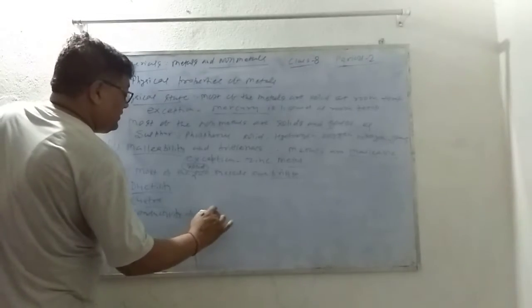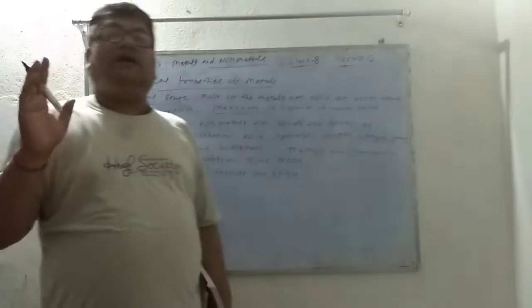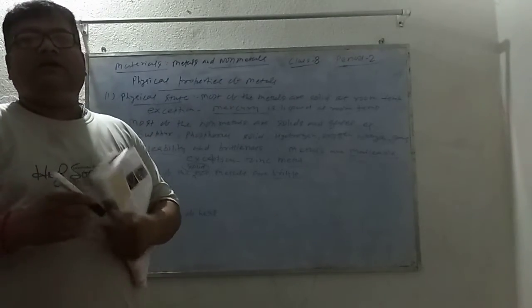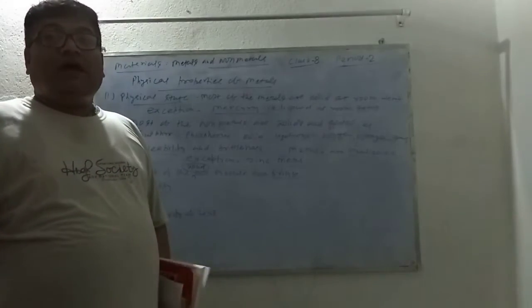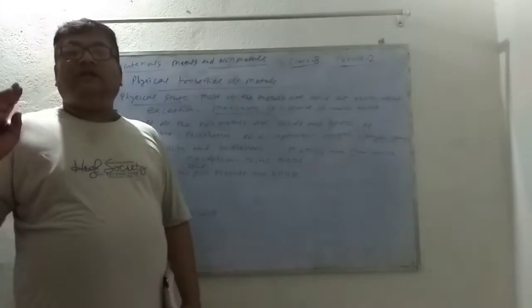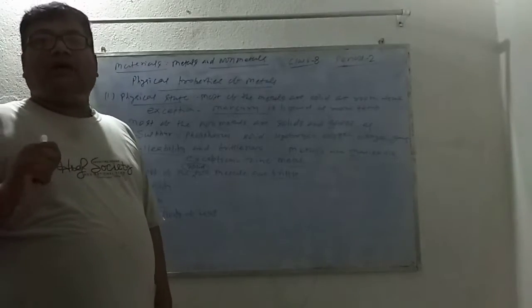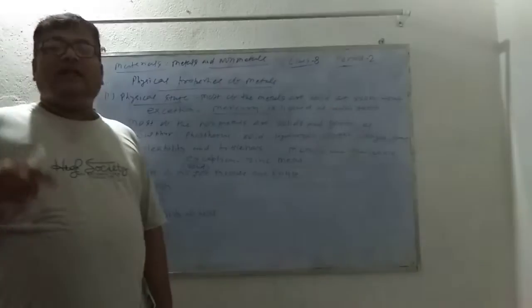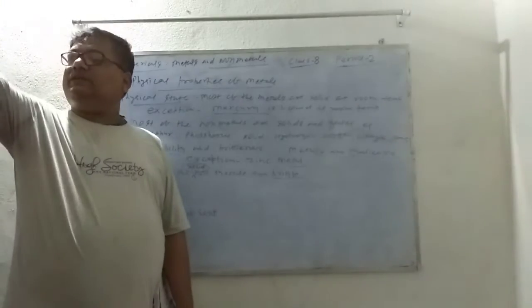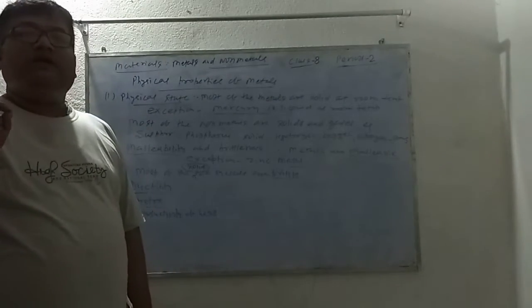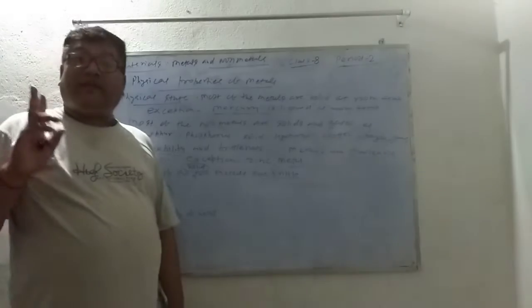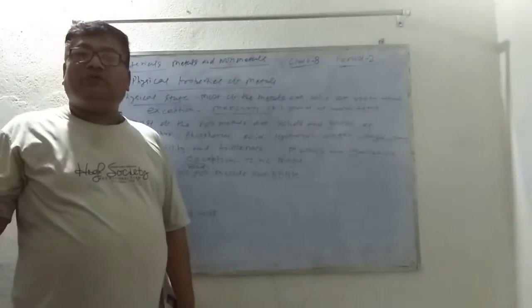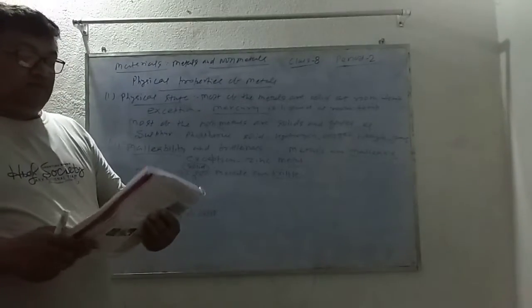Most of the metals are good conductors of heat and electricity. That is why cooking utensils are made of metals — because they are good conductors of heat. Similarly, electrical wires are made of copper and aluminum because they are good conductors of electricity. So metals are good conductors of heat and electricity.